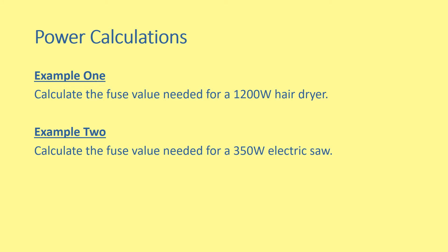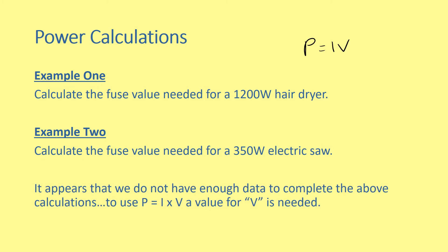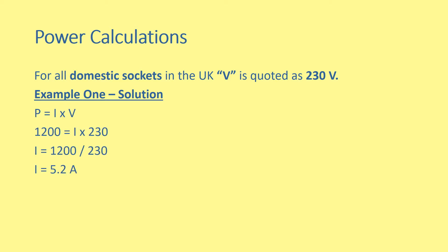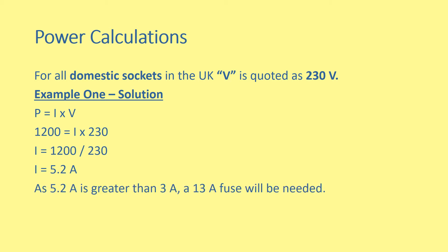Here are a couple of example calculations. Calculate the fuse value needed for a 1200 watt hair dryer. Calculate the fuse value needed for a 350 watt electric saw. To calculate these, we use P equals IV. For all domestic sockets in the UK, voltage is quoted at 230 volts. Example one solution: P equals IV, so 1200 equals current multiplied by 230, giving a current of 5.2 amperes. As 5.2 amperes is greater than 3 amperes, a 13 ampere fuse is needed. If we used the 3 ampere fuse, too much current would flow through it every time the hair dryer is switched on, the fuse would break and the hair dryer wouldn't work.